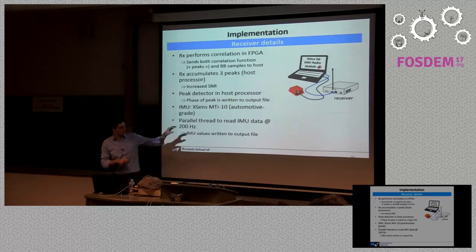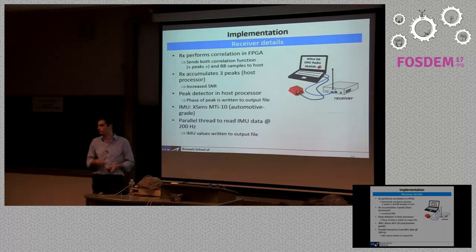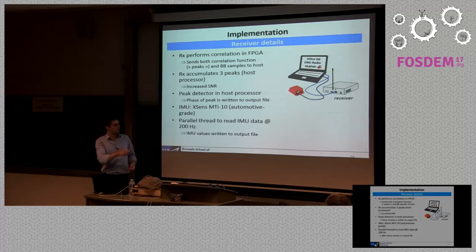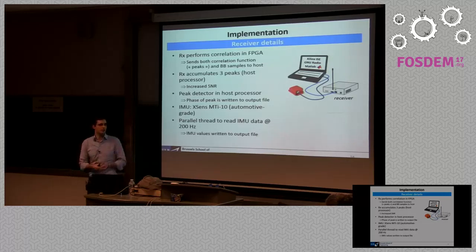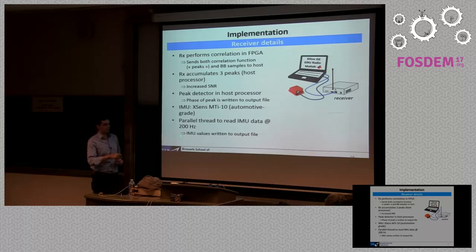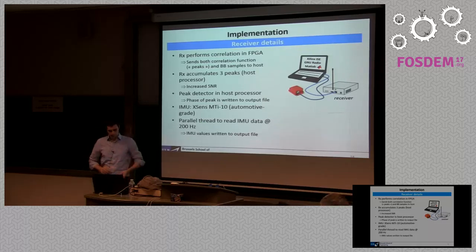We also read data from an IMU — a rather high-end IMU used for more expensive vehicles, costing a few hundred euros. We have a thread in the radio that reads in parallel data from the IMU and data from the USRP, combining them in a meaningful way and dumping everything to an output file for offline processing.